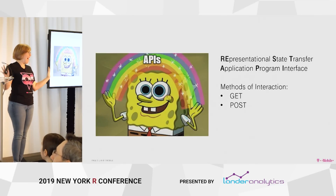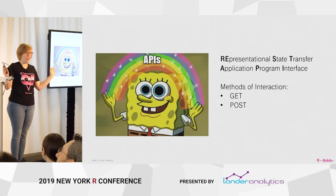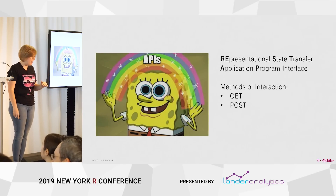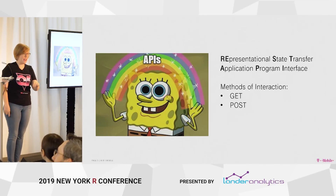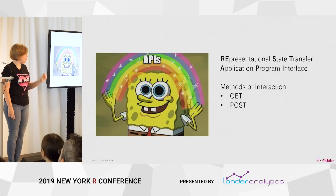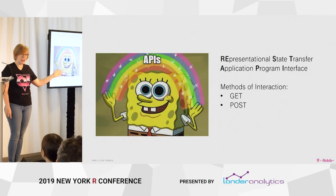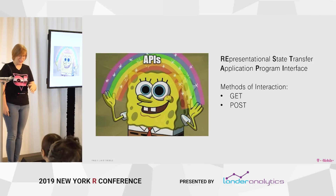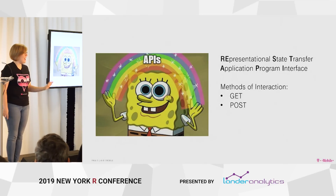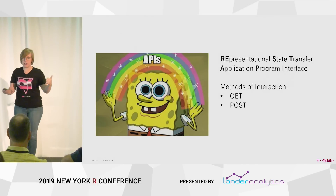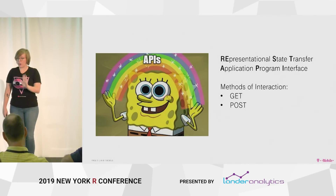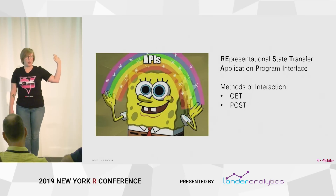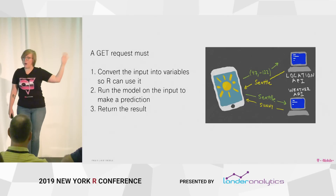We do this with APIs. And people say API all the time and it sounds really intimidating, but all an API is is every time that you go to a website on your phone, you are hitting an API. An API is just a way of getting information from the internet instead of from a console. So you guys hit APIs all the time. And there are two ways that people primarily hit APIs. Every time that you go to a website, that's a GET request — you're saying, "weather.com, please tell me the weather of the day."